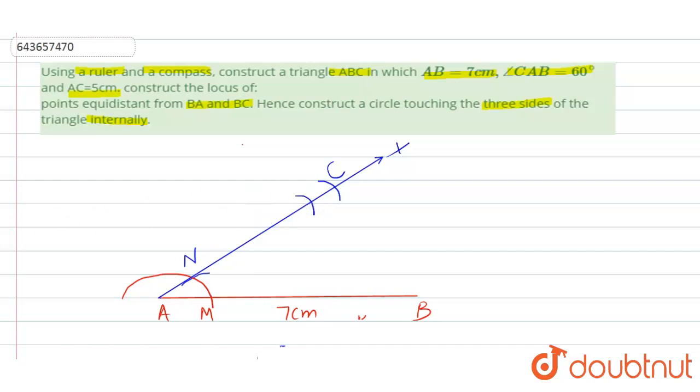So you can, okay, then see your AC, see your 5 centimeter. Then join AC like this. Join BC. Okay, this is your required triangle ABC.